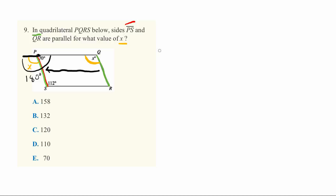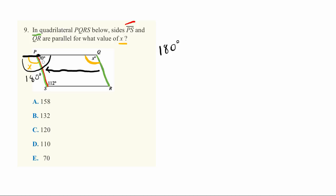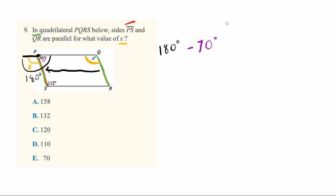We know the full angle is 180 degrees, and we know this other segment equals 70 degrees. So if we take 180 minus 70 degrees, we get X. In this case, 180 minus 70 equals 110 degrees — answer D.